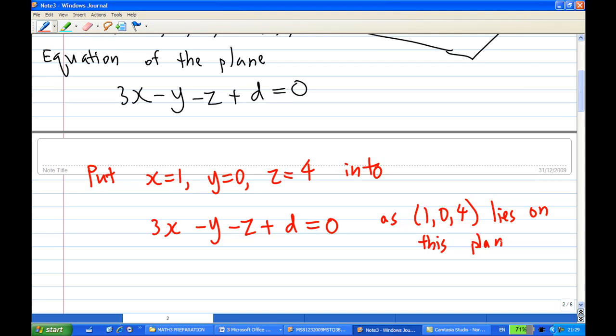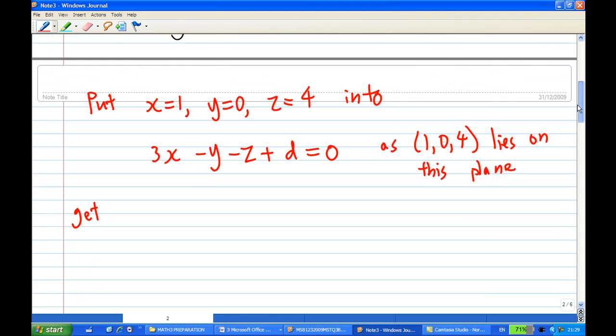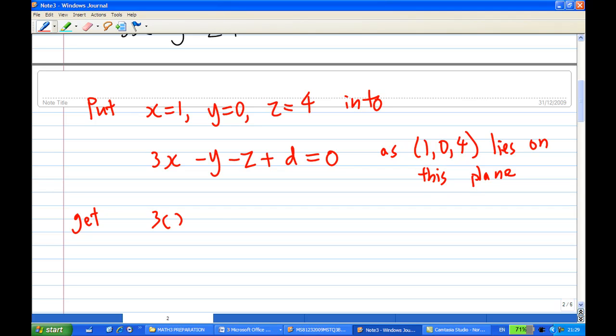And the equation of the plane is given by 3x - y - z + d = 0. And we get, what is d now? So 3 times 1 is 3, y is 0, z is 4. You will get -1 + d = 0, so d is equal to 1.